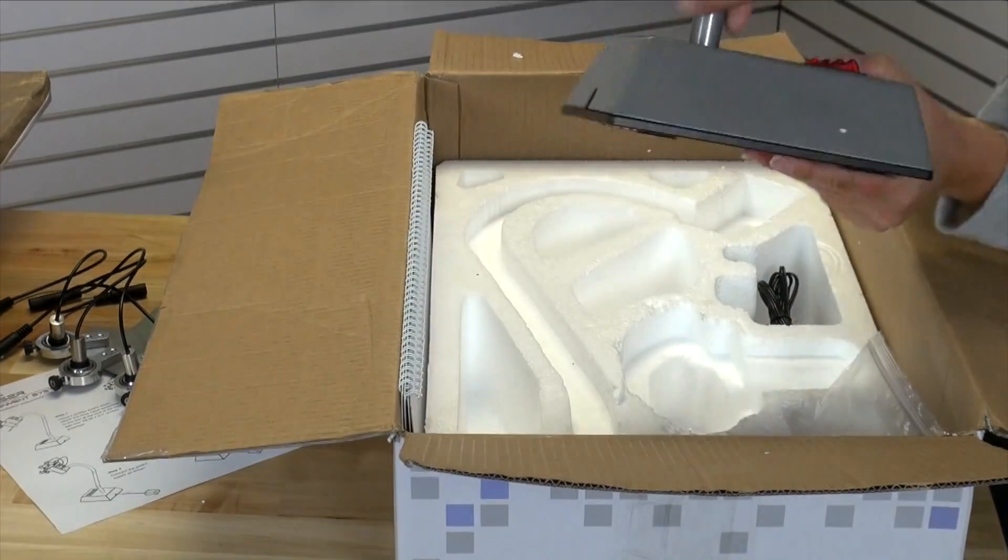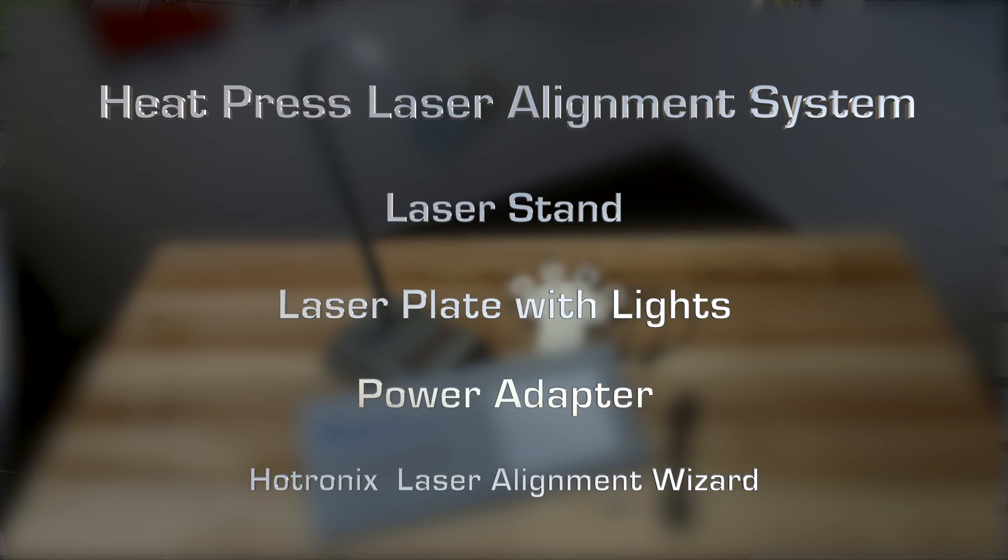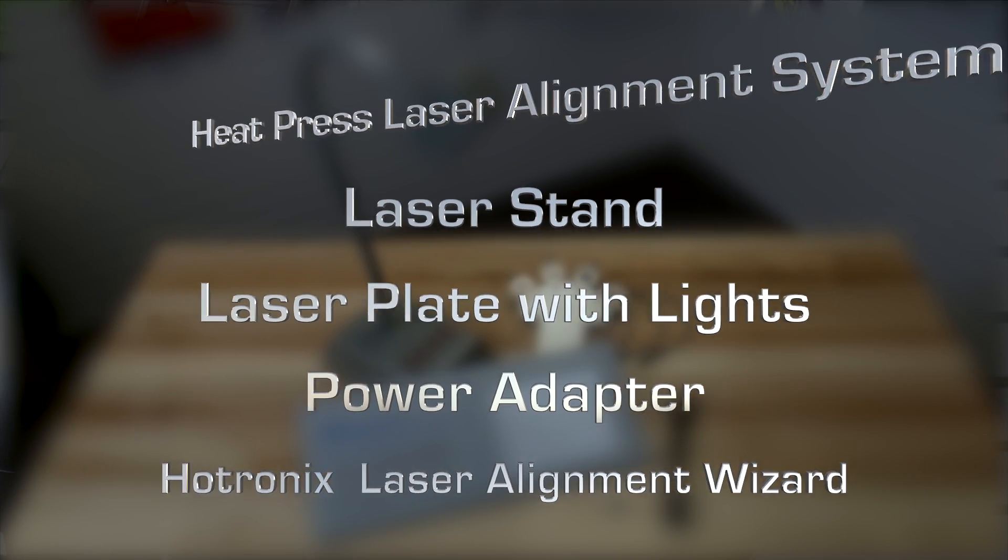Unpack the heat press laser alignment system and instruction sheet. The system includes the laser stand, laser plate with lights, the power adapter, screws, and the laser alignment wizard.